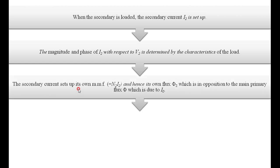The secondary current sets up its own MMF (magnetomotive force). Whenever there is a current flowing in the winding, it produces its own MMF, given by the product of the number of turns and the current. Therefore, N2·I2 is the MMF set up by the secondary current, producing flux phi2 which opposes the main flux phi produced by I0.